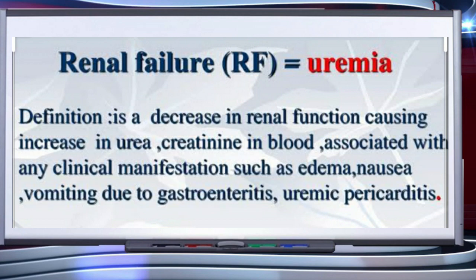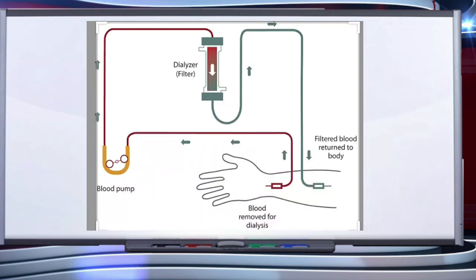Malfunctioning of kidneys can lead to accumulation of urea in blood. This condition is called uremia, which is highly harmful and may lead to kidney failure. In such patients, urea can be removed by a process called hemodialysis. In this process, blood drained from a convenient artery is pumped into a dialyzing unit after adding an anticoagulant like heparin.